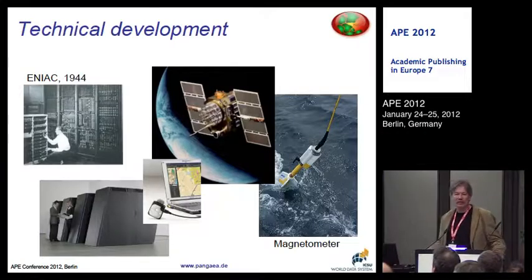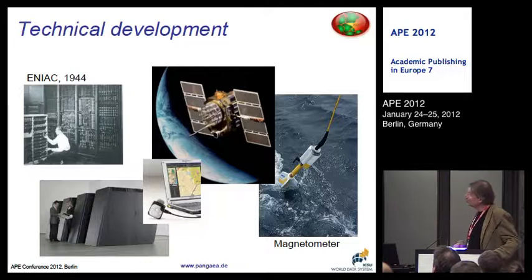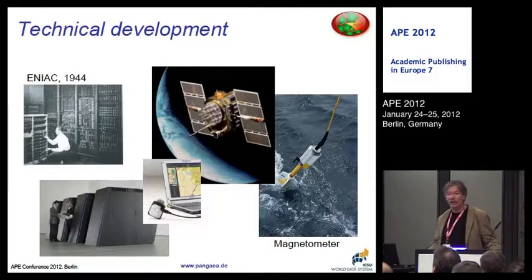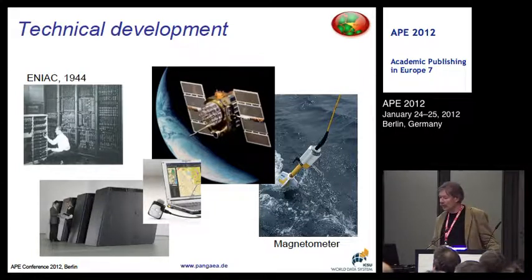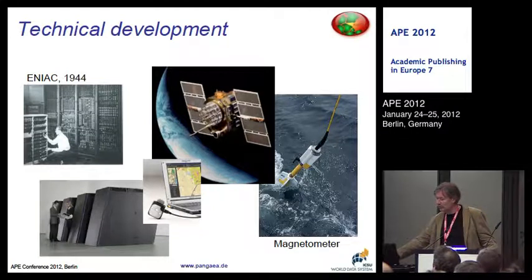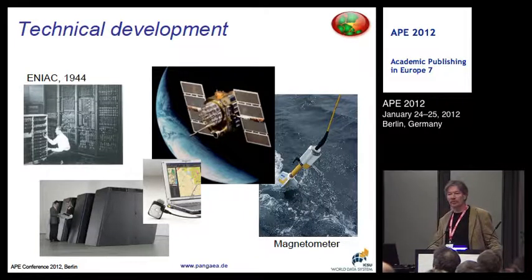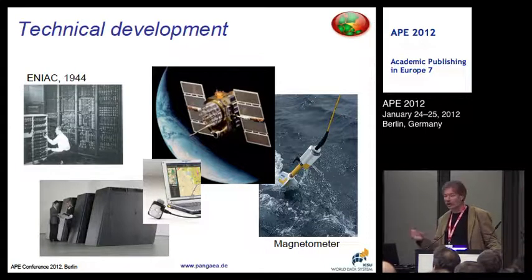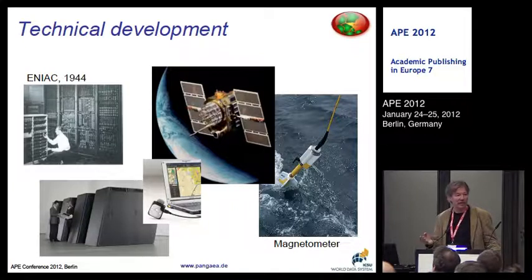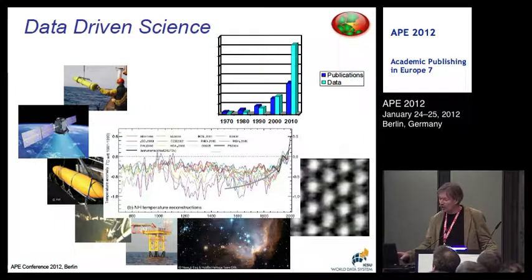The technical development was very fast, as you can see here from the ENIAC computer or SUSE computers up to the mainframes that we have now running worldwide. Even the picture here in the middle is already the past, not existing any longer. This magnetometer, by the way, was one of the ways to prove the theory of continental shift by Alfred Wegener, which he was not able to prove at his time because he didn't have the data — there was no evidence for that. So today the scenery has changed a lot.